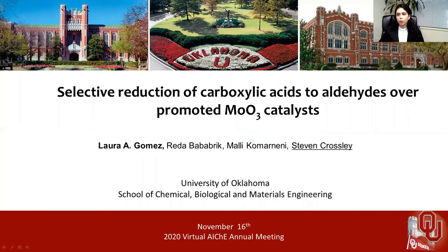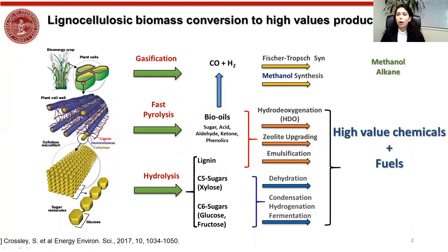Biomass conversion has been proposed as an alternative to mitigate the worldwide dependency from petroleum-based sources. Gasification, fast pyrolysis, and hydrolysis are the three main chemical processes to convert biomass to high-value chemicals and fuels. However, these require further upgrading strategies. Some of them are hydrodeoxygenation, CO-like upgrading, and emulsification.